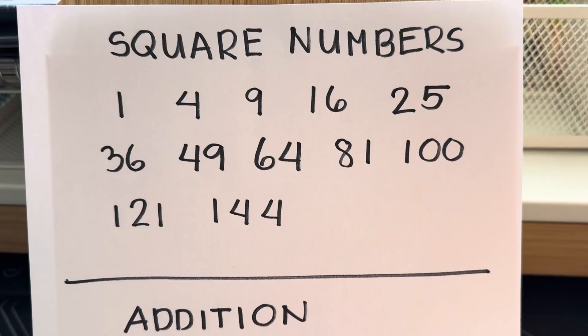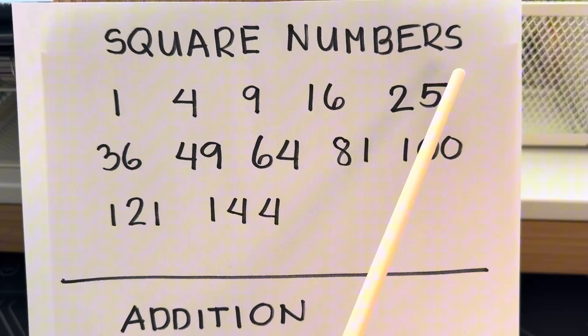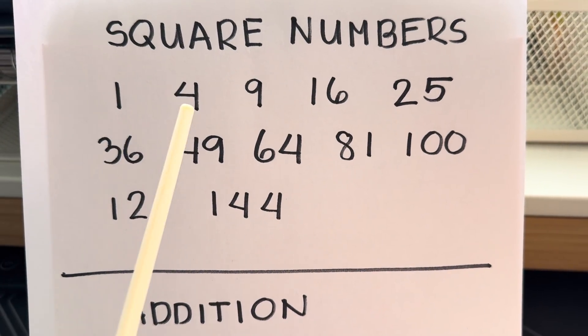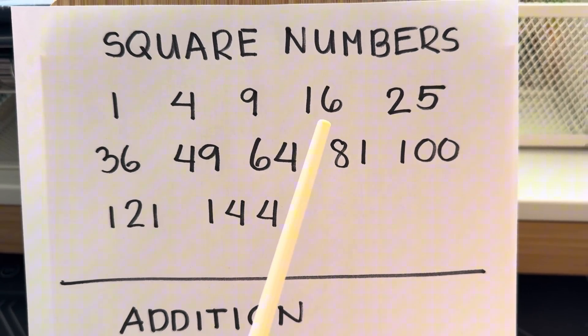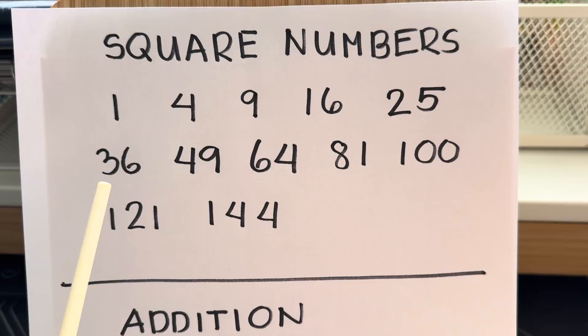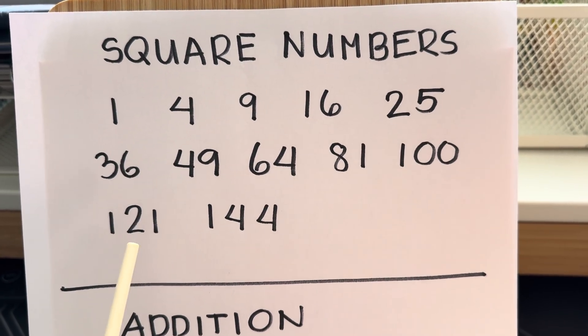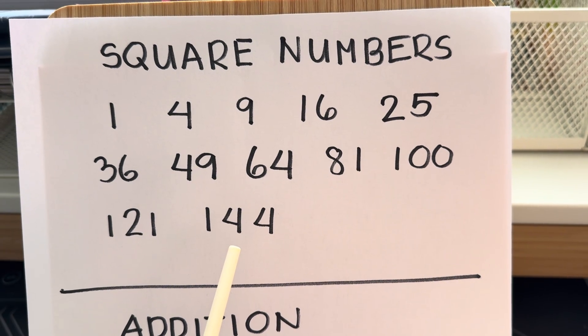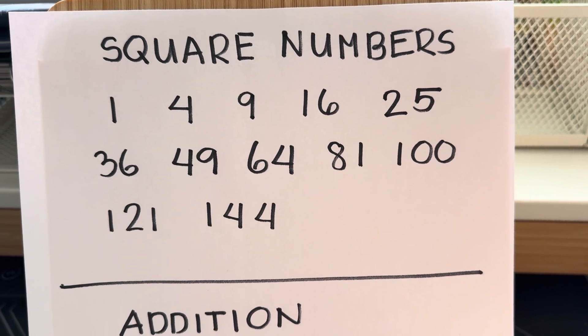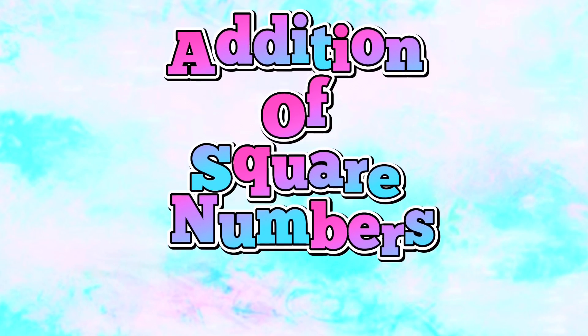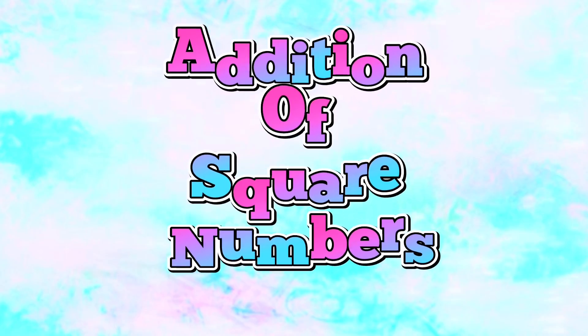Let's repeat it again! The square numbers! 1, 4, 9, 16, 25, 36, 49, 64, 81, 100, 141. And now let's do the addition of square numbers!